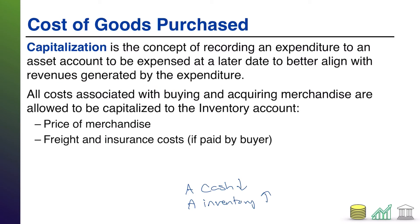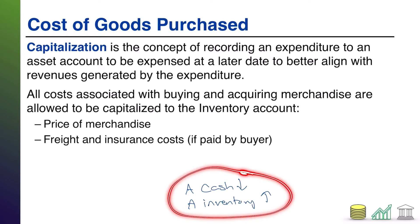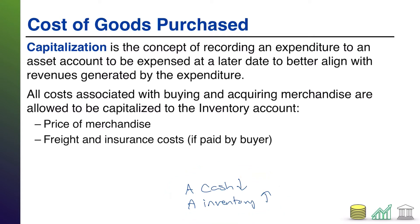There's a key reason we do this: to better align with revenues generated by the expenditure. Think about it — you're buying this inventory. If you're a merchandising company, you're buying inventory with the intent to resell it to a customer. You haven't lost value at the time of purchase. But when you sell this to the customer, that asset called inventory will go away and you'll get the revenue from making the sale. At that point, you'll recognize the expense, lining it up with the revenue generated from the sale.